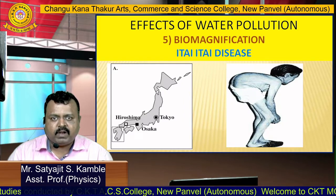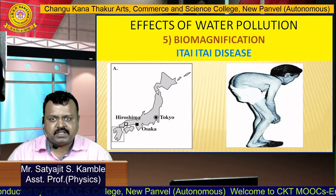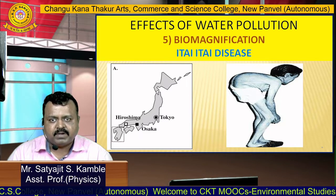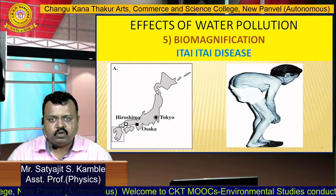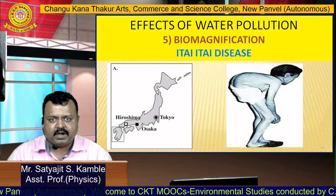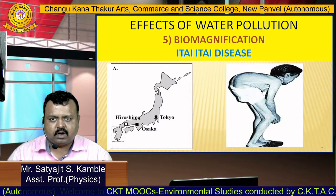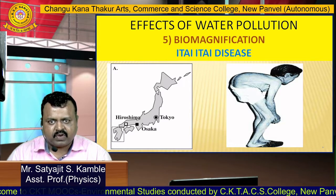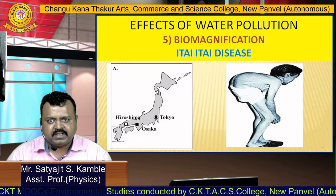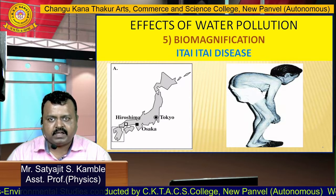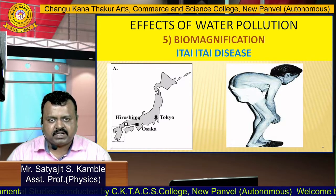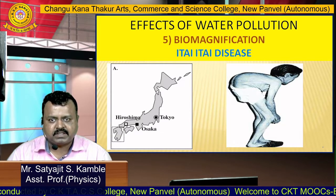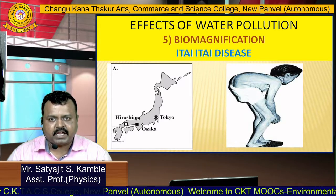A second example of bio-magnification is Itai-Itai disease, which also happened in Japan. Farmers unknowingly used toxic industrial effluent for irrigating their crop fields, and these crops were consumed by human beings. The amount of cadmium was very high, and this cadmium toxicity resulted in a crippling disorder in many human beings. This disease is known as Itai-Itai disease.